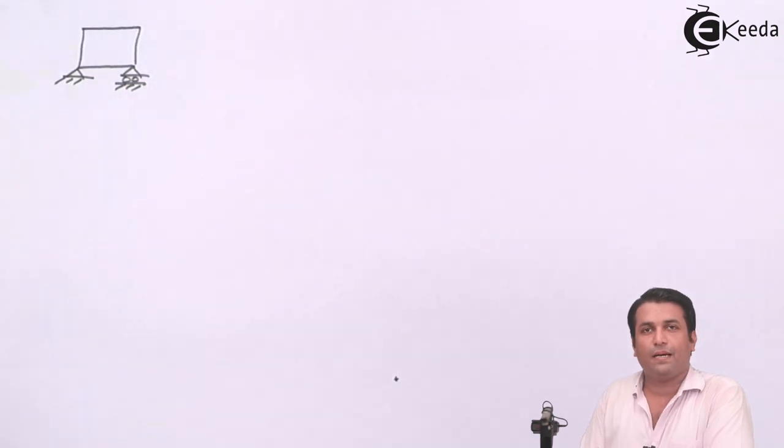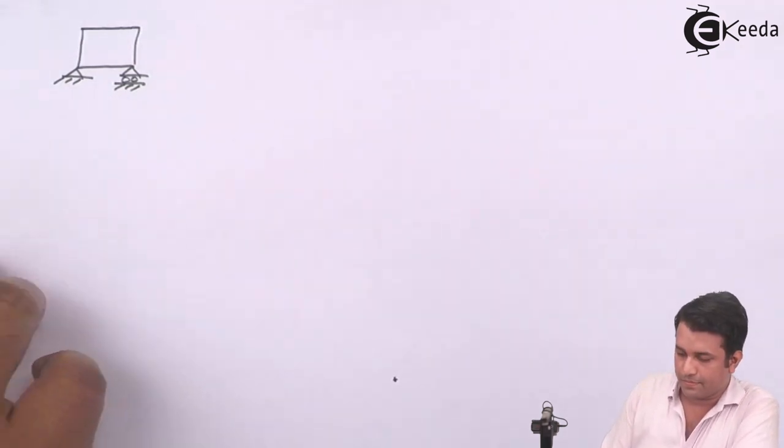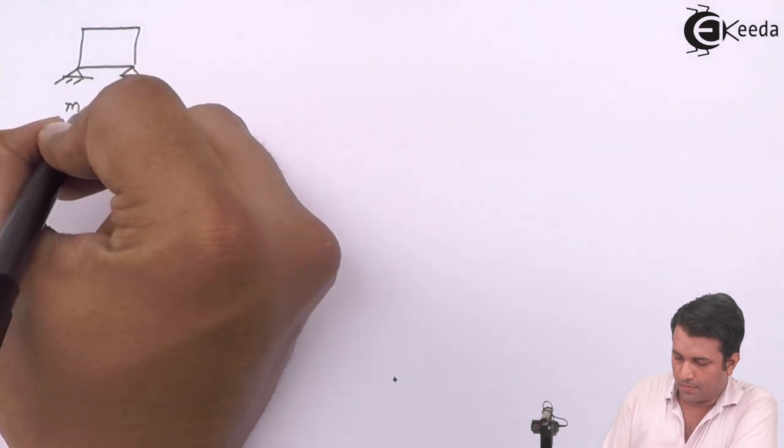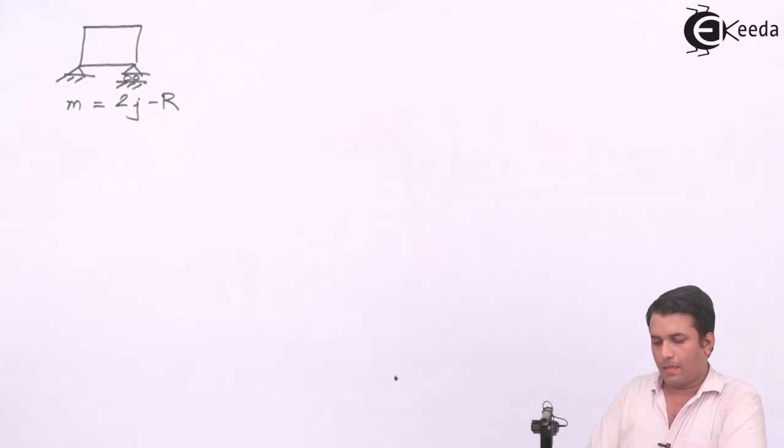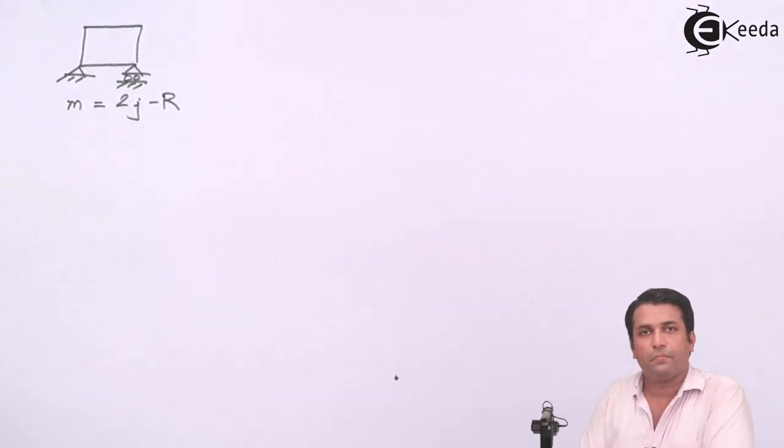This is the second example that I can show for a truss. We will see the stability criteria for the truss. Again, we will define the members, joints, and the reactions.